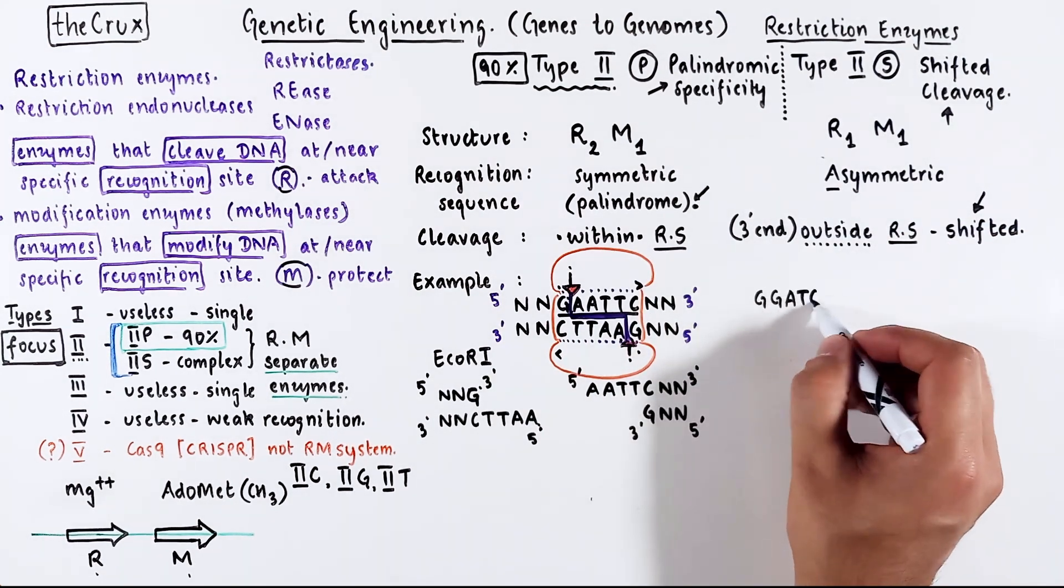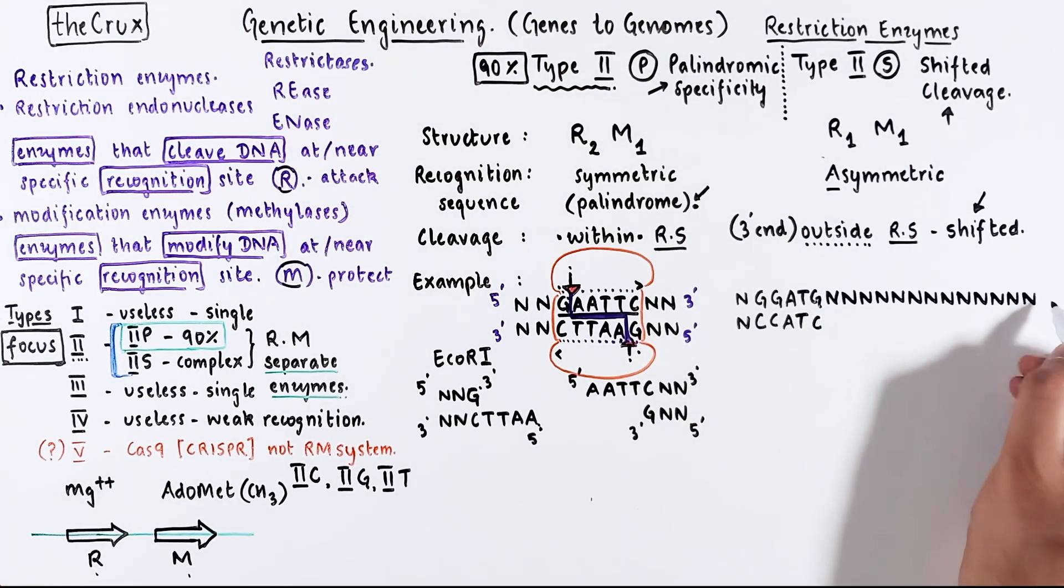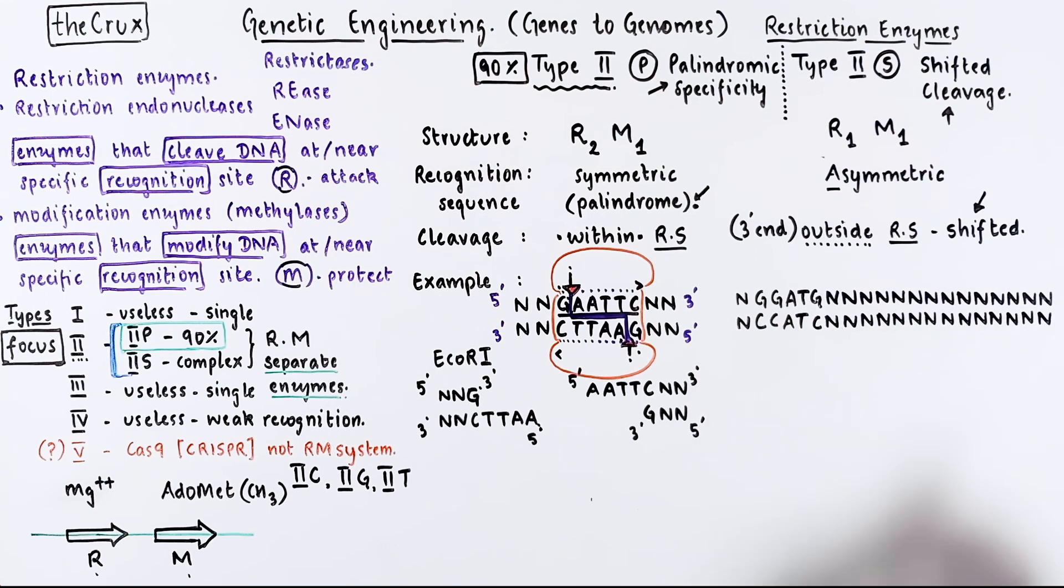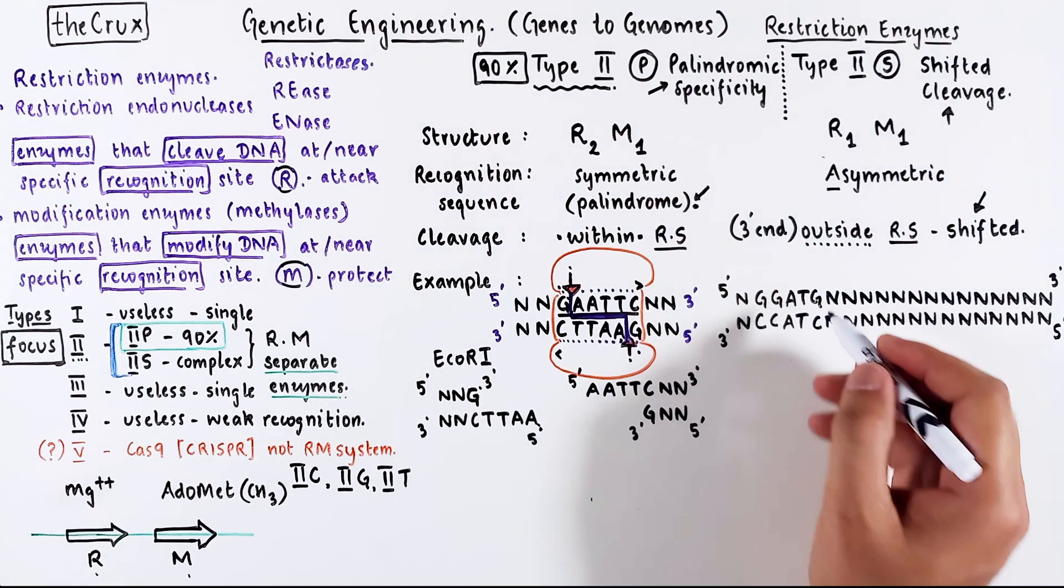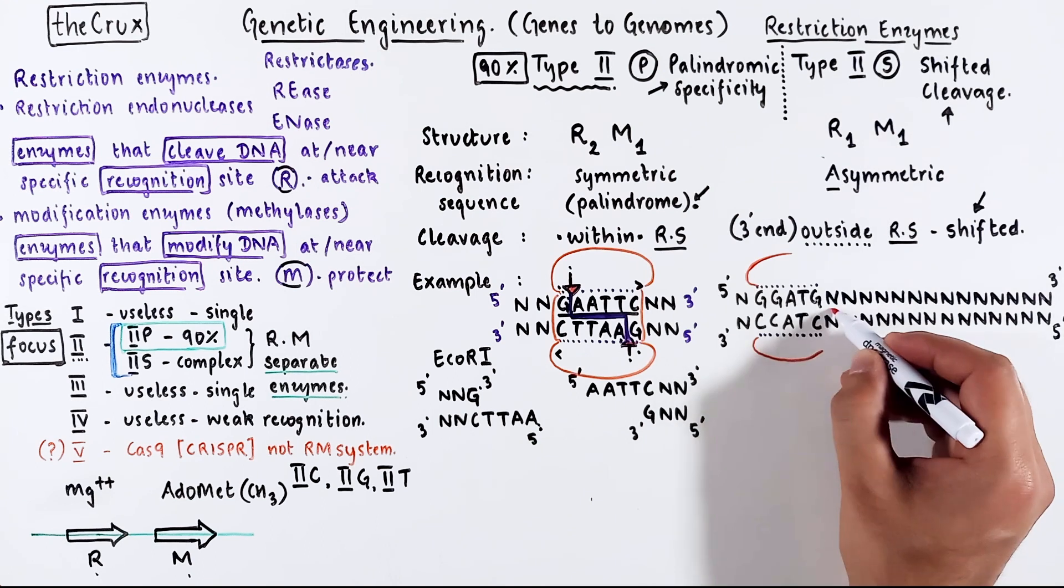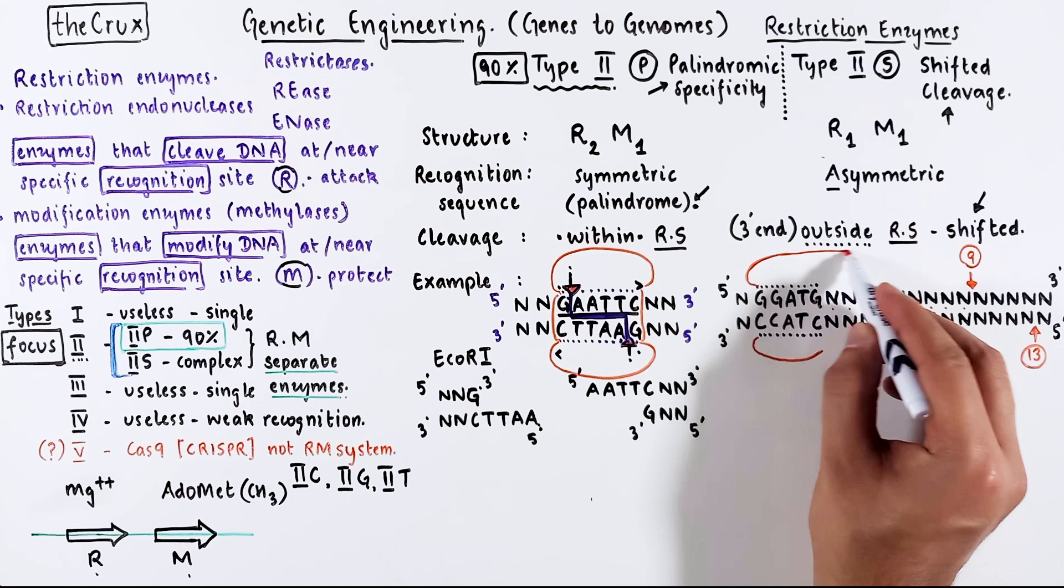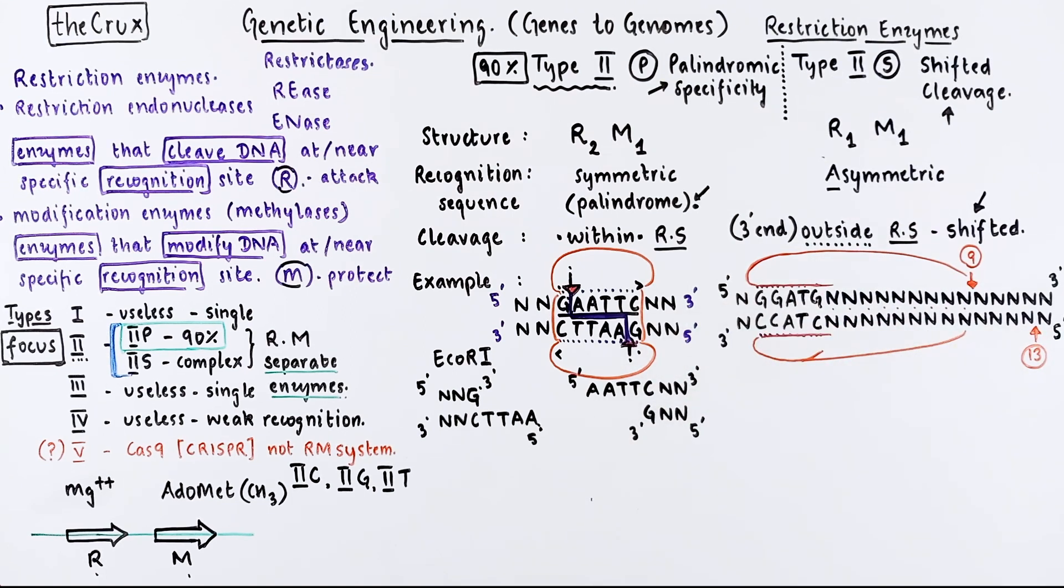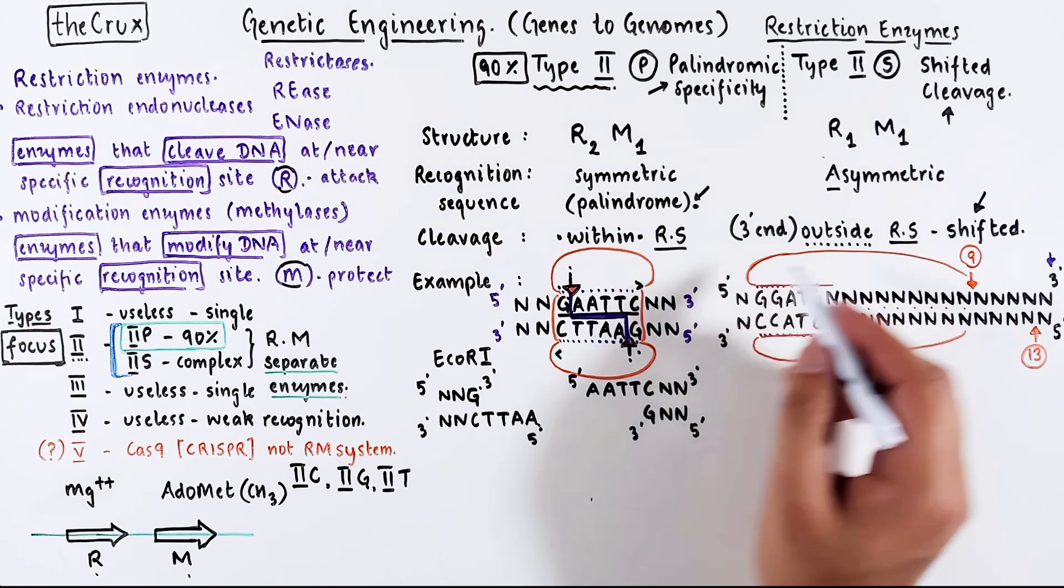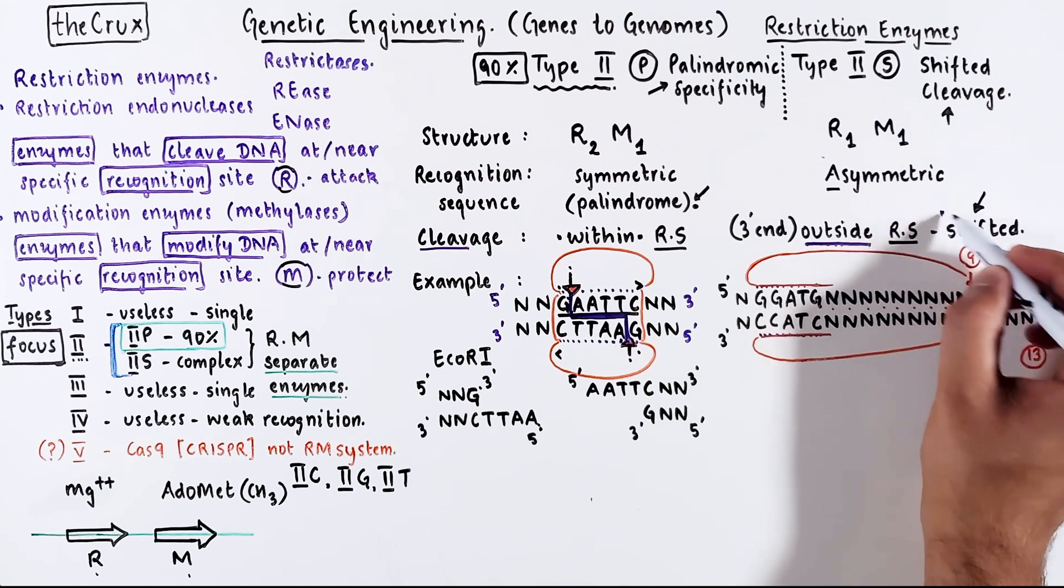Now take the example of this DNA sequence, which as you can tell is not a palindrome. It does not read the same in both directions. And let's imagine there are some DNA sequences around this site, which can be anything. This DNA sequence is recognized by a specific enzyme which makes a cut quite far away from the recognition site at position 9 and 13. Recall, we did say that type 2S enzymes have a tendency to cut at 3' ends outside of the recognition site, and that is the shifted cleavage.